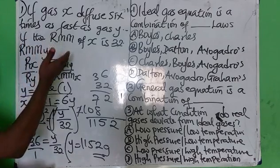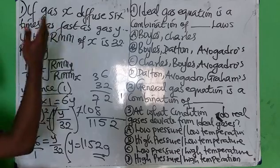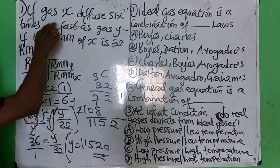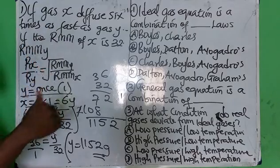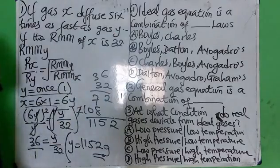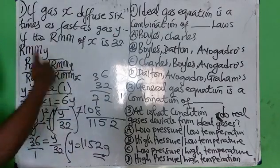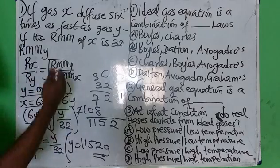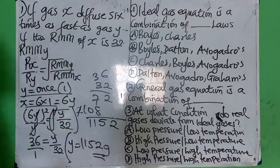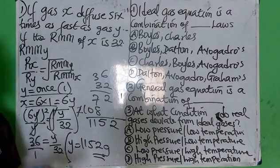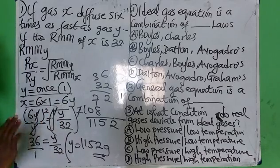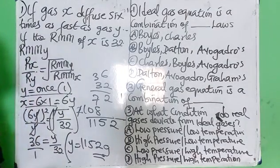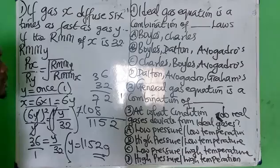To recap: gas X diffuses six times as fast as gas Y. Gas Y diffused just once, gas X diffused six times, which means six times Y, or six Y. That is what we substituted into the formula. It is very easy. Let me give you another example before I give you an exercise to solve, and you will drop your answer in the comment section.